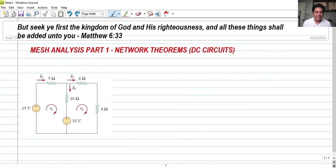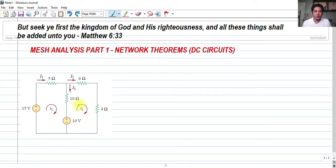Today we're going to talk about mesh analysis. This is part of a DC circuit video wherein we're going to tackle one of the network theorems in DC circuits. In our example, we have two mesh currents represented by I sub 1 and I sub 2, and we're going to solve the values of the branch currents I sub 1, I sub 2, and I sub 3 using mesh analysis.